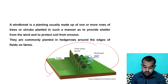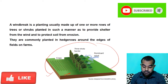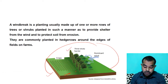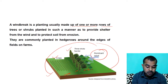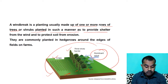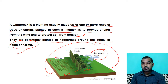In a windbreak structure, the larger side is the crop area. Adjacent to the crop, we plant trees in three rows — the tallest row is nearest to the crop, medium height in between, and the smallest height on the opposite side of the crop. When dominant wind moves, it will not hamper the crop. A windbreak is usually made of one or more rows of trees or shrubs planted to provide shelter from wind and to protect soil from erosion. They are commonly planted in hedgerows around the edges of field crops.